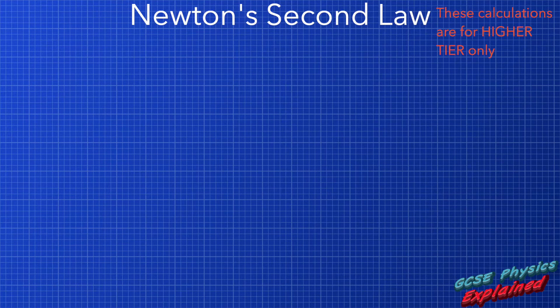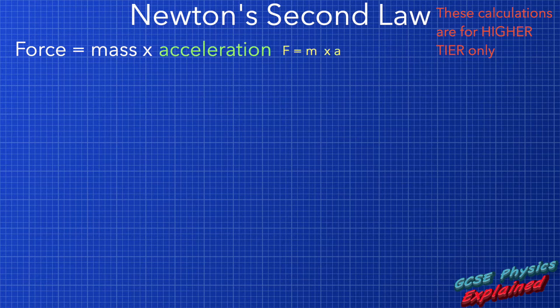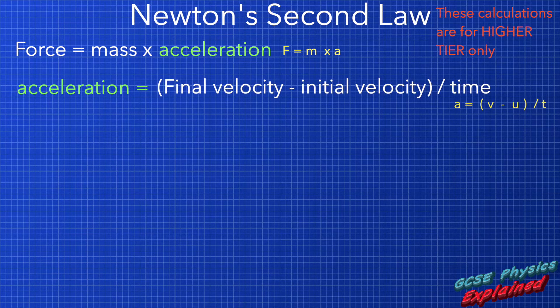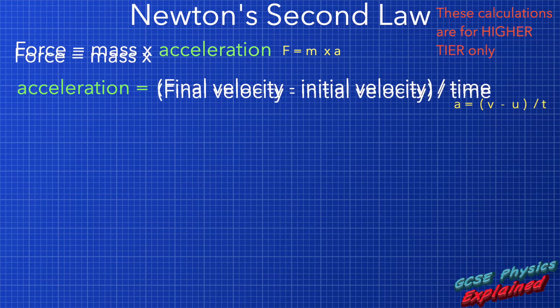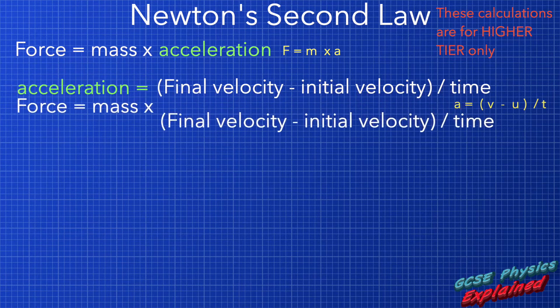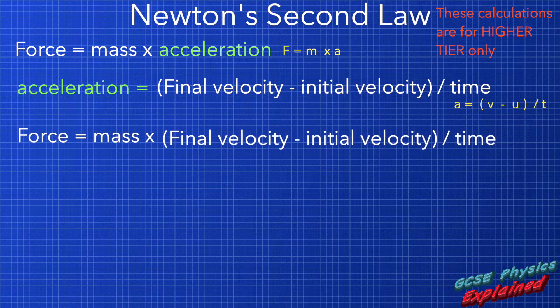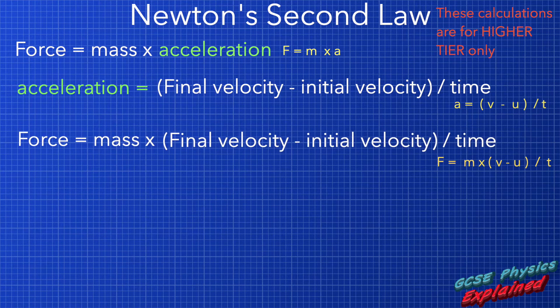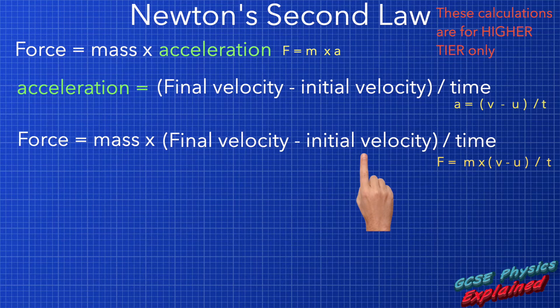Our understanding starts with Newton's second law. From Newton's second law, we know that force equals mass times acceleration. We also know that acceleration equals the final velocity take away the initial velocity, divided by the amount of time taken for the change in velocity to happen. Combining these two equations, we can create an equation that helps us calculate impact force: impact force equals mass times (final velocity minus initial velocity) divided by the time taken for the change in velocity to happen.